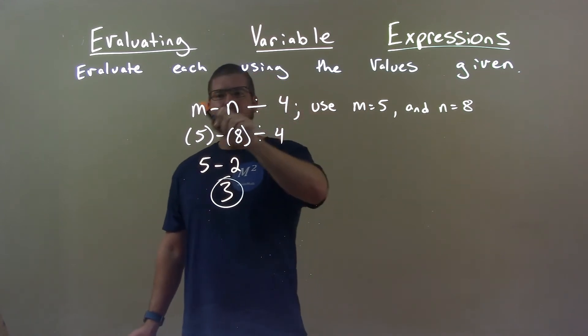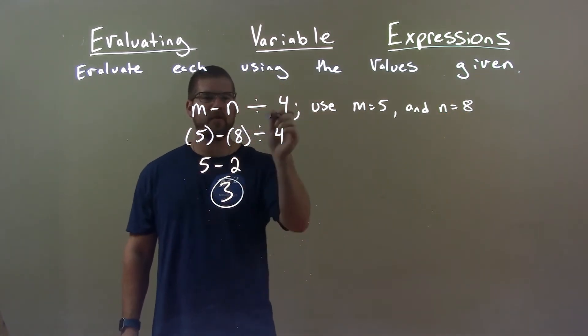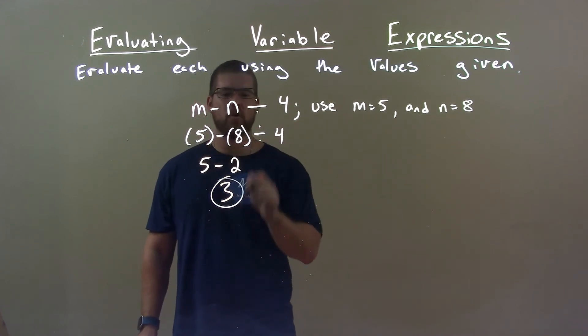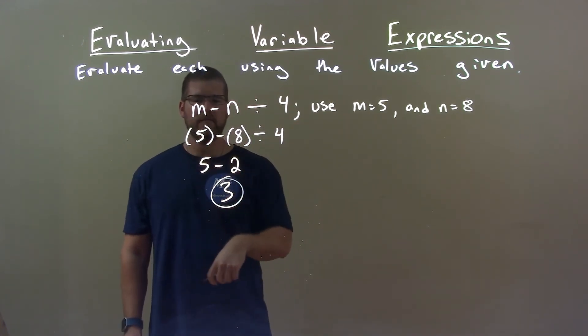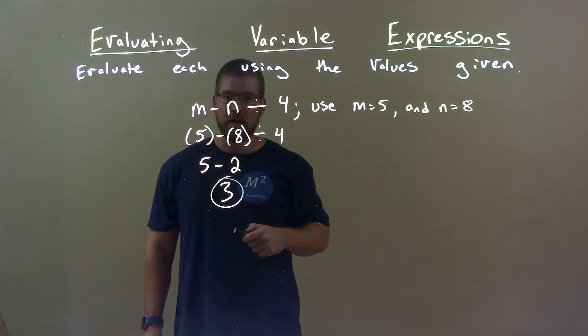m is 5 so 5 goes in for m, n is 8, substitute in. Division comes first, 8 divided by 4 is 2. Bring down the 5. 5 minus 2 is 3 and so 3 is our final answer.